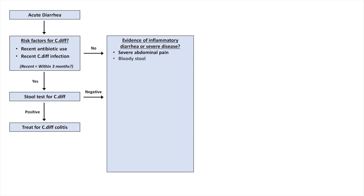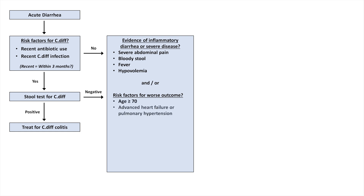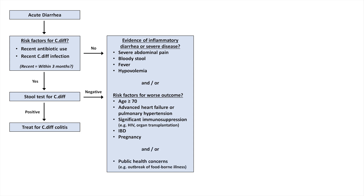This includes severe abdominal pain, bloody stool, fever, and/or hypovolemia. Consider whether they have any risk factors for a worse outcome — this includes age of 70 or above, advanced heart failure or pulmonary hypertension, significant immunosuppression meaning diseases like HIV and organ transplantation, pre-existing inflammatory bowel disease, and pregnancy. Also consider whether there are any public health concerns, meaning are they part of a new suspected outbreak of a foodborne illness. Despite many things being listed in this box, the majority of patients meet none of these criteria, in which case you should just monitor them and treat symptoms.